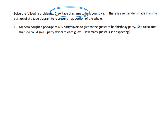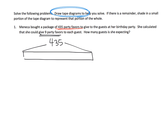Menica bought a package of 435 party favors to give to the guests at her birthday party, and she calculated that she could give nine party favors to each guest. How many guests is she expecting? The tape diagram is going to start with a bar representing the 435 party favors. We know she gives nine party favors to each guest, so we have nine, nine, nine — and we keep going until we reach 435. The big question is: how many nines are there going to be? This is basically a tape diagram representing division.